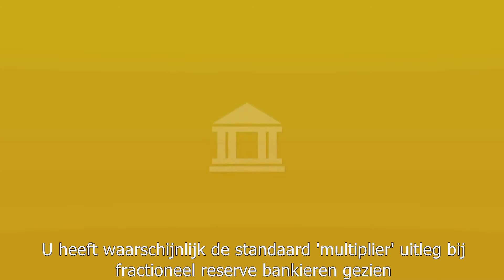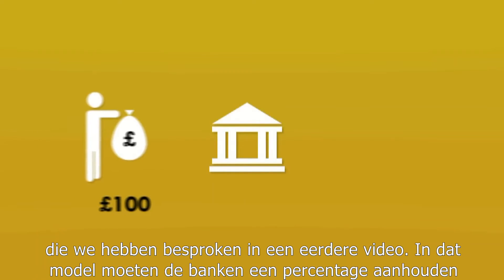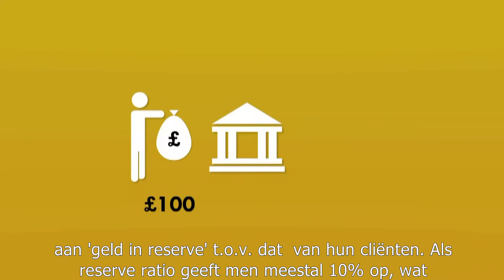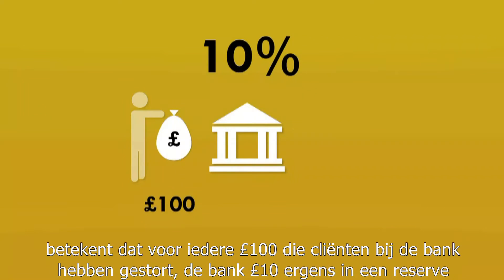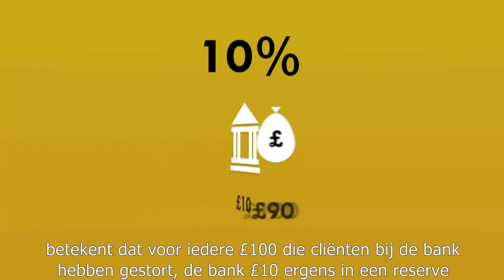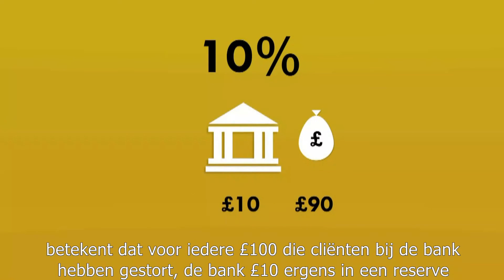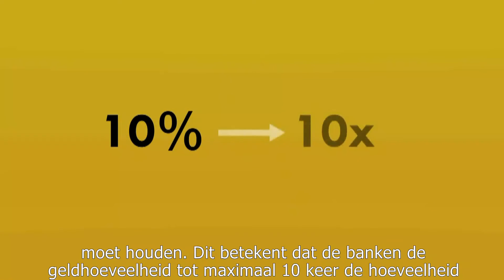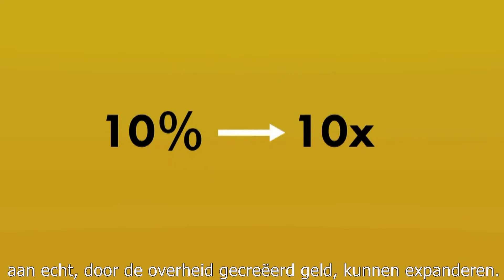So what actually limits how much money the banks can create? You've probably seen the standard multiplier explanation of fractional reserve banking that we discussed in an earlier video. In this model, the banks have to keep a percentage of their customers' money in reserve. The reserve ratio given is usually 10%, which means that for every £100 paid into a bank by customers, the bank must keep £10 in reserve somewhere. This means that the banks can only expand the money supply up to 10 times the amount of real, government-created money.